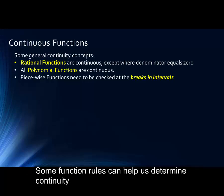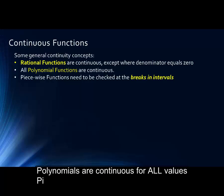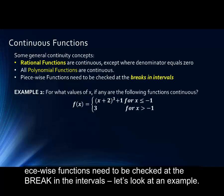Some function rules can help us determine continuity. Rational functions, as we have seen, are continuous at all values except values that make the denominator equal zero. Polynomials are continuous for all values. And piecewise functions need to be checked at the break in the intervals. Let's look at an example for that one.